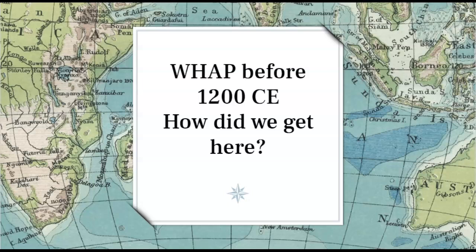Hi, welcome back. I'm Mrs. Baranek and this is video four of my series for AP World History answering the question, how did we get here? Covering material that's significant to your understanding of the course, but that's no longer covered since we became AP World History Modern. In the first three videos, we covered advances in human history from the Paleolithic or Old Stone Age through the Neolithic or New Stone Age, which covered the rise of ancient urban civilizations. Today, we're moving into the Classical Era.